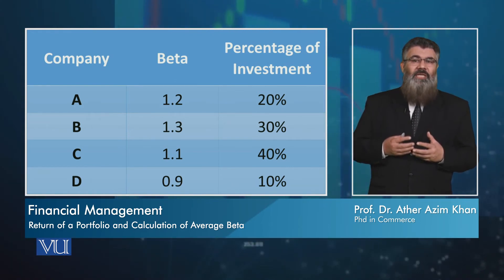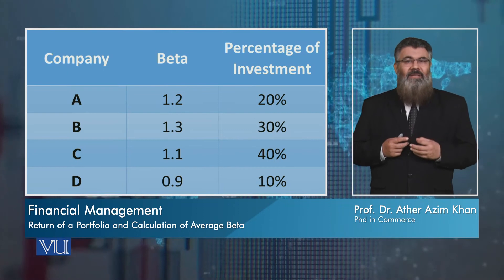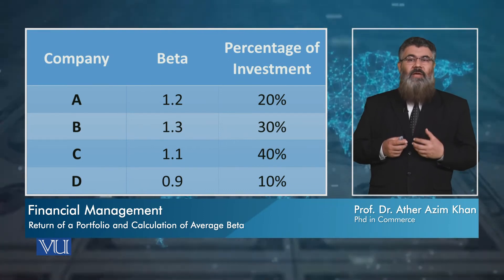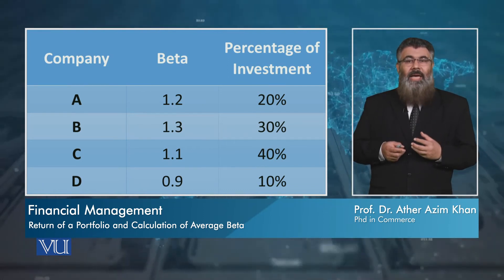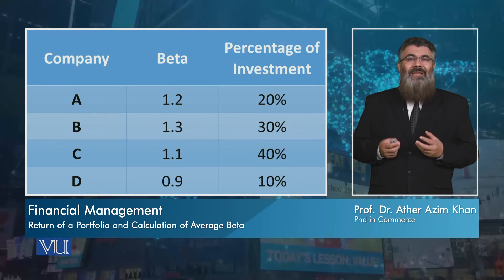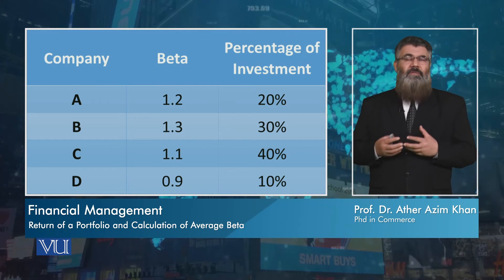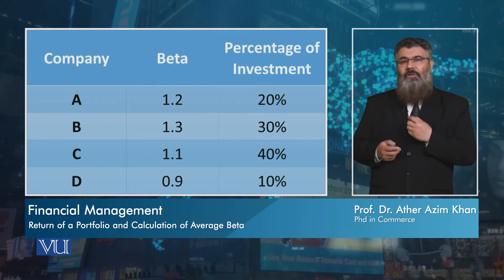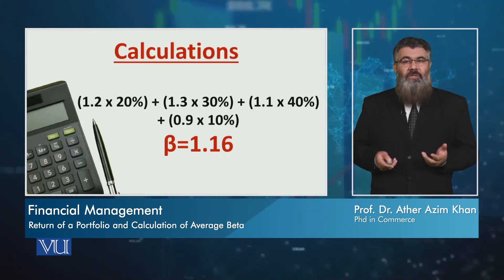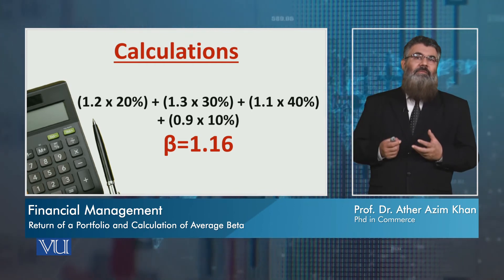For example, company C has the maximum investment of 40% with a beta of 1.1, the stock with the maximum beta has 30% investment, and stock D with the minimum beta has only 10% investment. If we do not account for the percentage of investment in each stock, we cannot calculate the true beta. The weighted average is calculated by multiplying each beta value by its respective investment percentage.